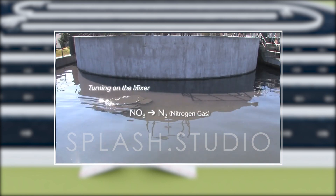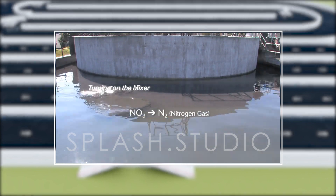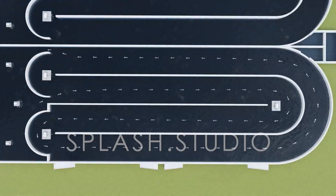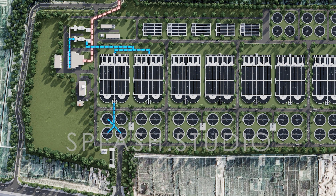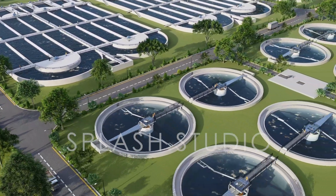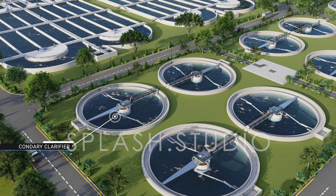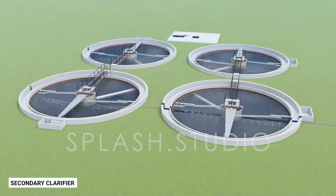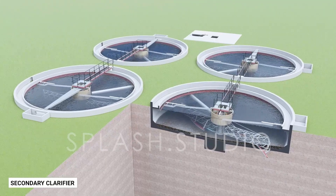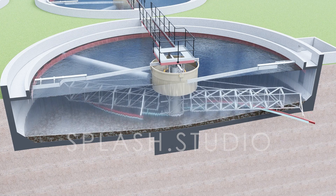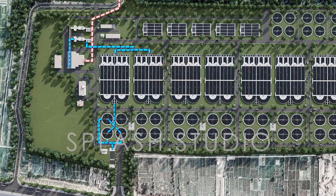Nitrates produced in this process will be converted to nitrogen gas and released into the atmosphere. After that, the water will enter a secondary clarifier. Here, final sediment will be directed towards the sludge treatment area. Water will be bypassed to the effluent chamber.